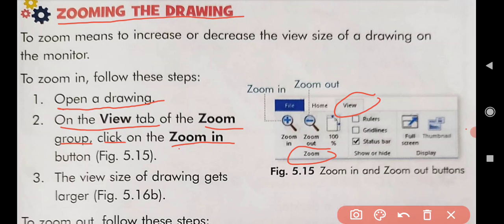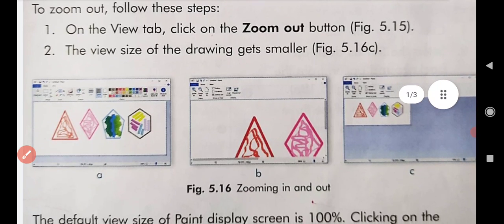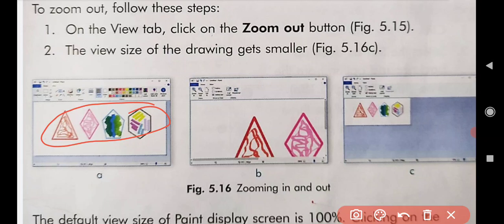Here is the Zoom group. In the Zoom group, we have to click on the Zoom In button. Here is the Zoom In button. We will click on the Zoom In button in the View tab of the Zoom group. The view size of the drawing gets larger. As we click on the Zoom In button, our drawing size will grow. It is shown in the figure — the size of the drawing is increased.